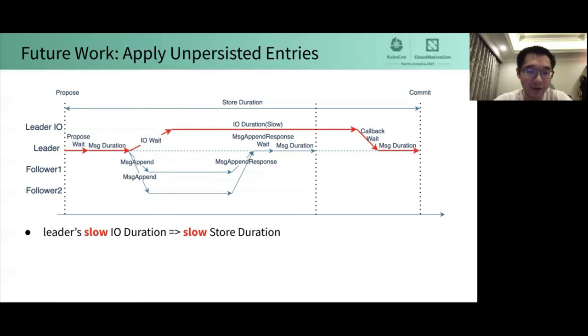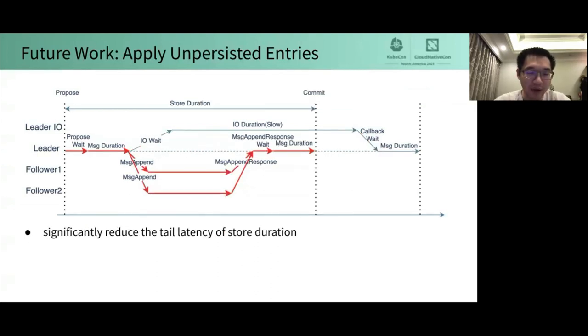Therefore, this is also one of the most important causes for tail latency of store duration. In fact, as long as the majority peers still exist, the committed entries will not be lost, so applying unpersisted entries in advance should not break correctness, and it can significantly reduce the tail latency of store duration. As shown in the figure, the store duration is much shorter than before.